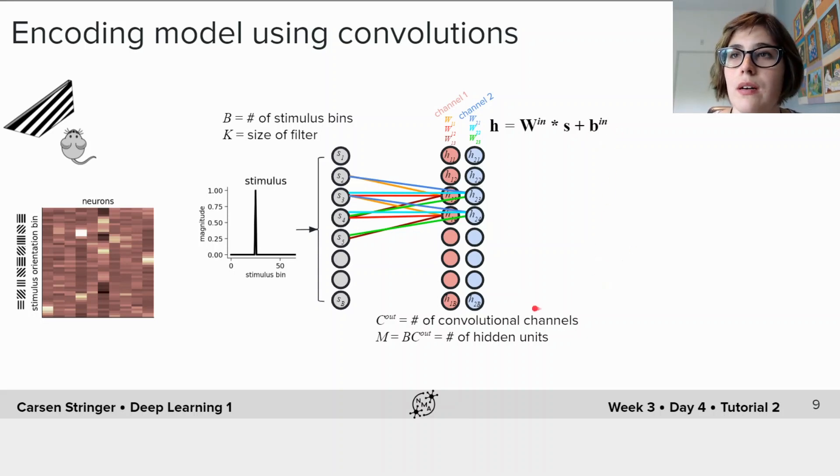Again using the same terminology as before, C_out is the number of convolutional channels we have, which in this case is two. And so the number of hidden units we have in total is going to be the number of convolutional channels we have times the number of stimulus bins we have b, because we're using the same padding so we get the same size output as we give input.